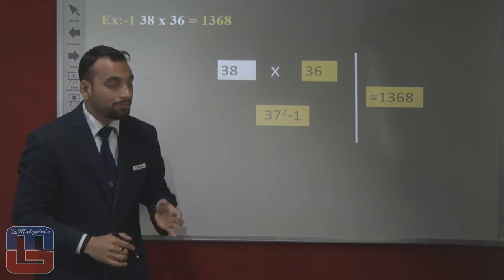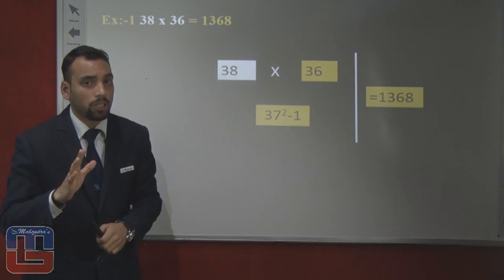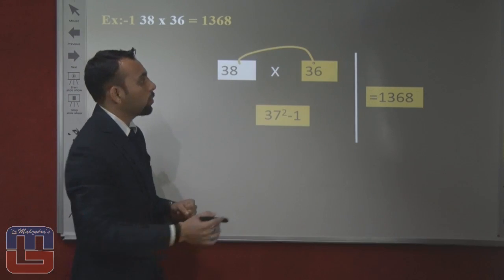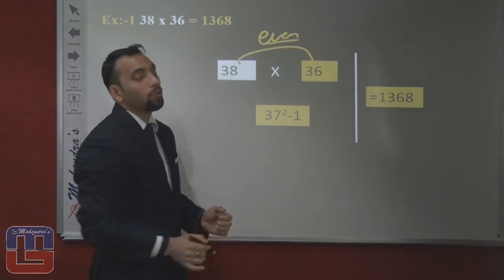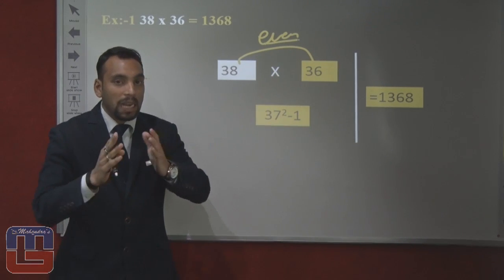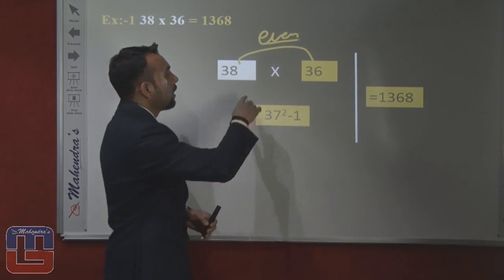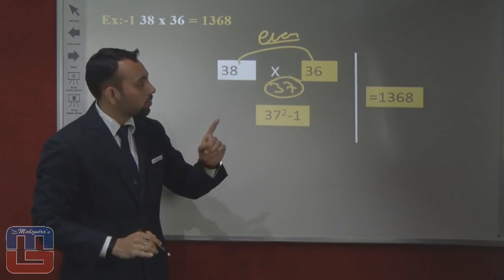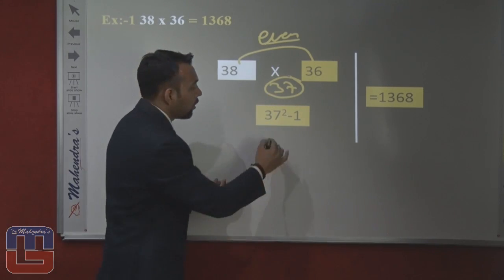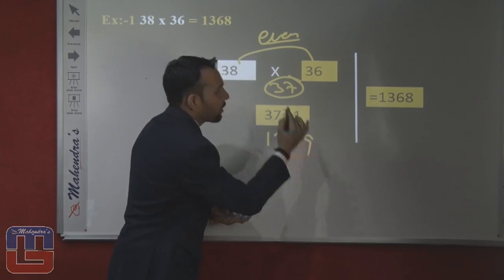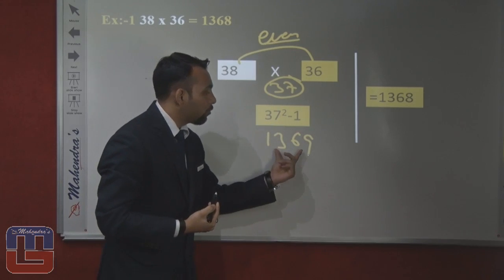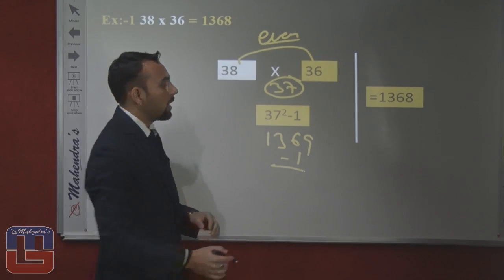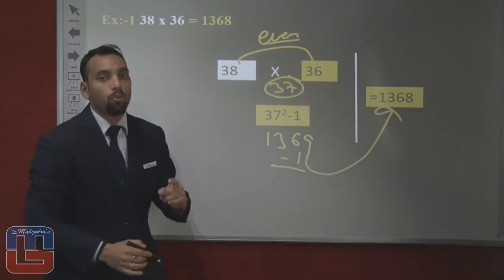Another example: 38 into 36, which are consecutive even numbers. The formula is middle number squared minus 1. The middle number between 36 and 38 is 37. So 37 squared equals 1369, and minus 1 gives 1368. So the answer is 1368.